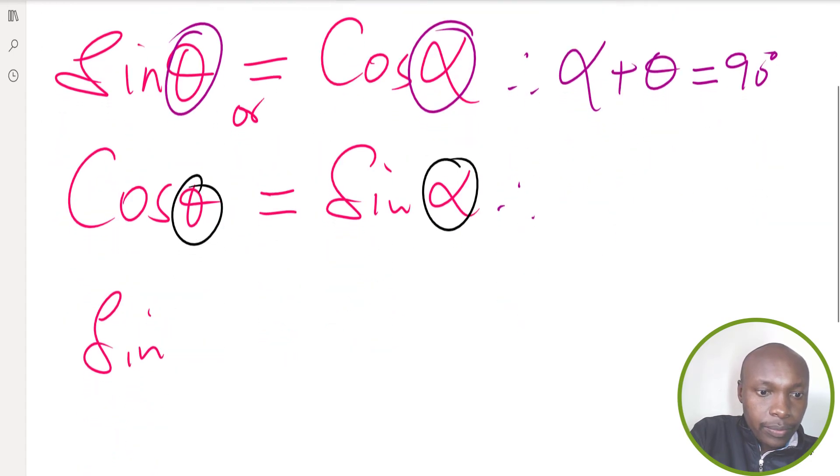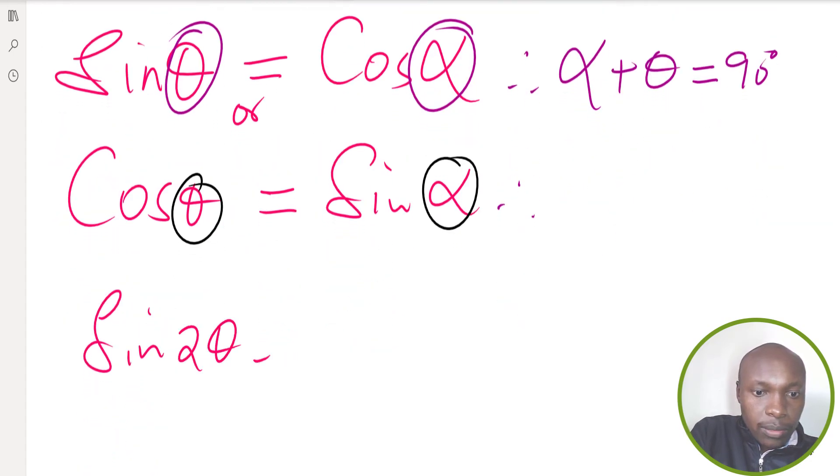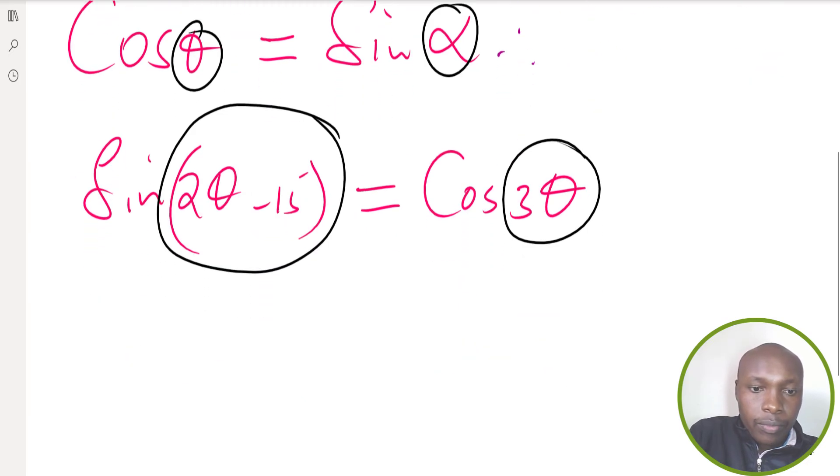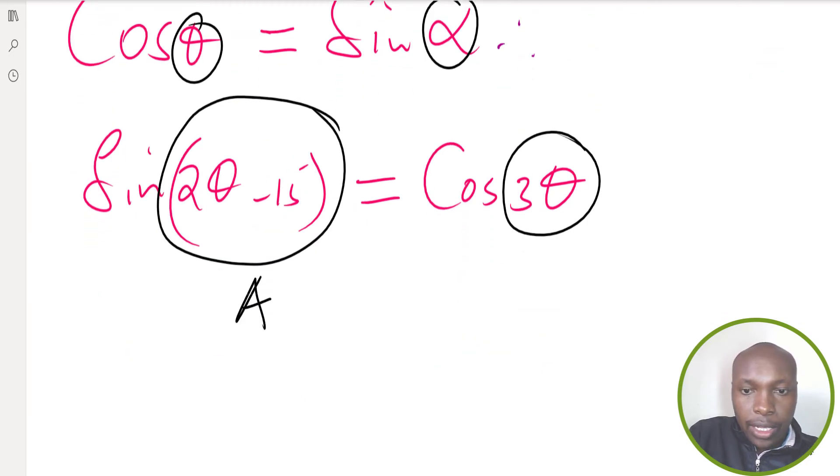This angle that is the sine of that angle, and this angle here - that is angle A, and the whole of this is angle B.